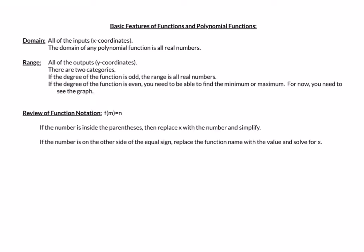Recall the domain — this is all of the inputs, or the x-coordinates. When we talk about the domain of polynomial functions, it doesn't matter what kind of polynomial function it is. Our domain is always all real numbers, or negative infinity to infinity. Our range, remember, is all the outputs, or the y-coordinates. For polynomial functions, we have two different categories. If the degree of the function is odd, the range is all real numbers, or negative infinity to infinity.